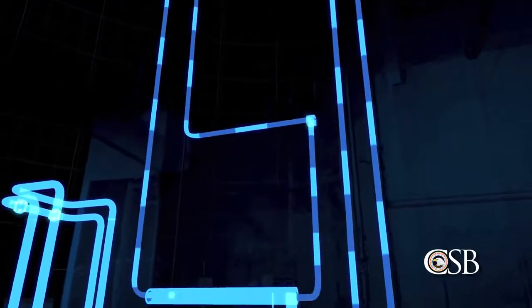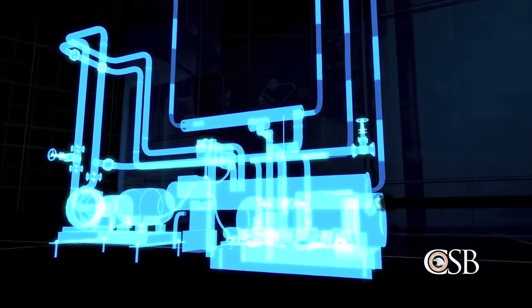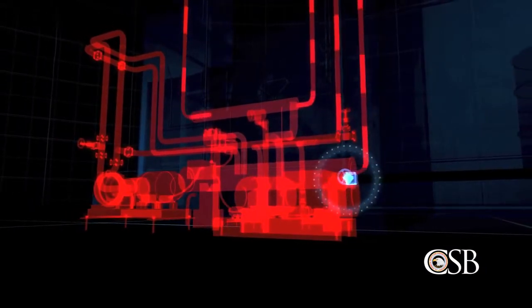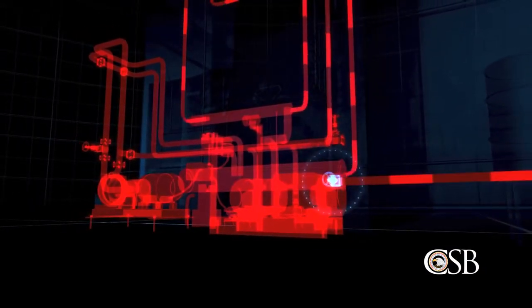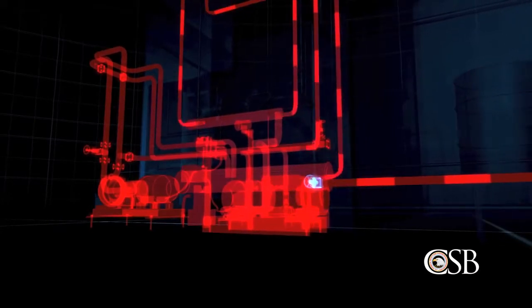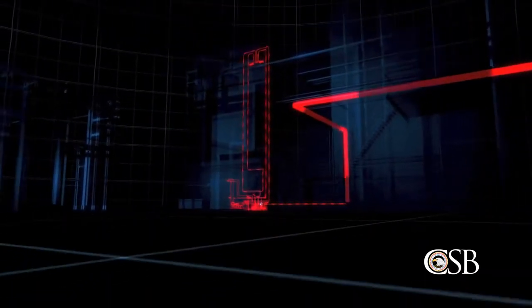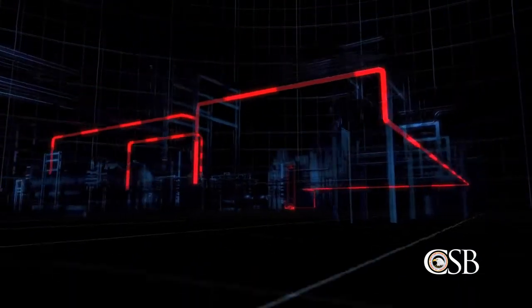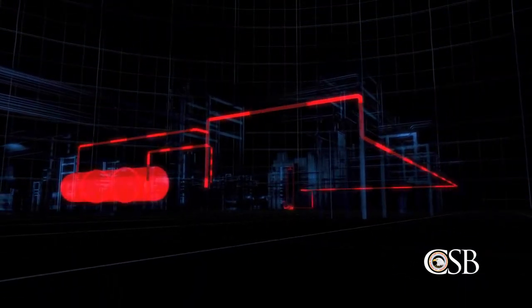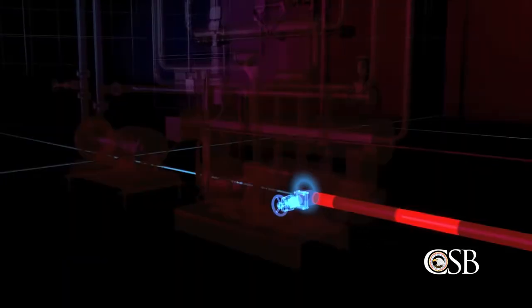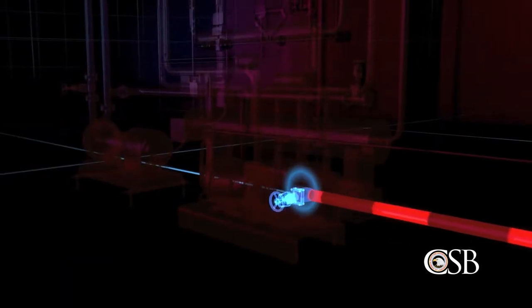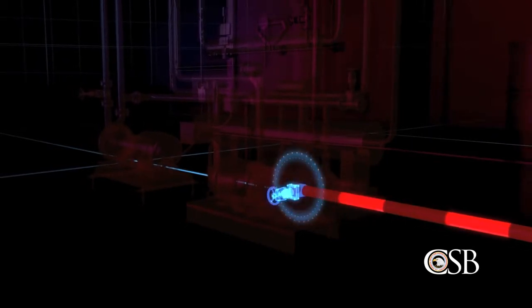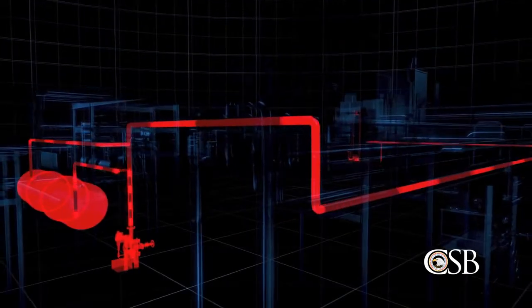But during the operation to remove the blockage, a valve was inadvertently left open that should have prevented hot water from flowing into other piping known as the methyl mercaptan feed line. The feed line connected the reactor system to a methyl mercaptan storage tank. Operators later discovered that approximately 2,000 pounds of water had escaped through the open valve into the feed line and back into the tank.